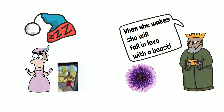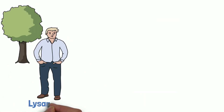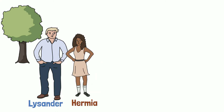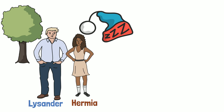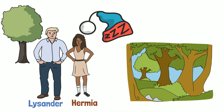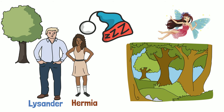We are then reintroduced to Hermia and Lysander. They have made it to the forest where they plan to hide out. After travelling all day they are tired and decide to get some rest. Hermia soon makes Lysander move away, as she is uncomfortable with them being too close before their wedding. Once asleep, Puck appears and spots Lysander sleeping. Because he is wearing Athenian clothes, Puck assumes Lysander is Demetrius and sprinkles his eyes with the love potion from the flower.